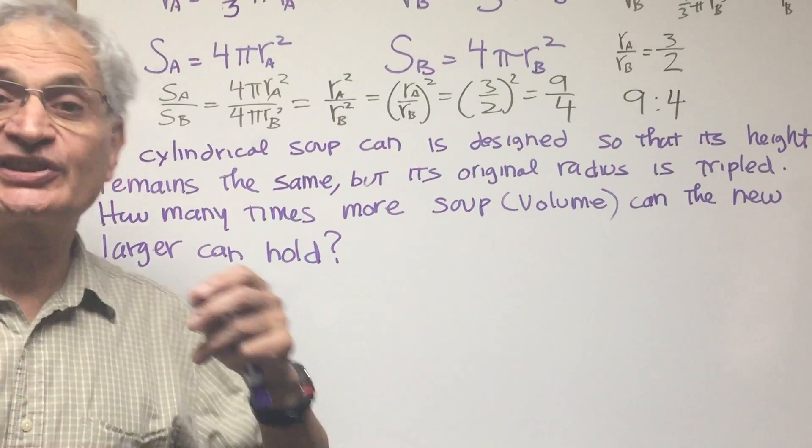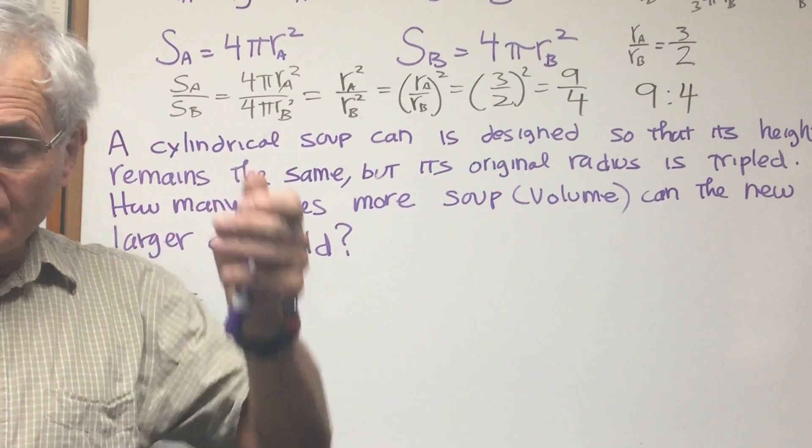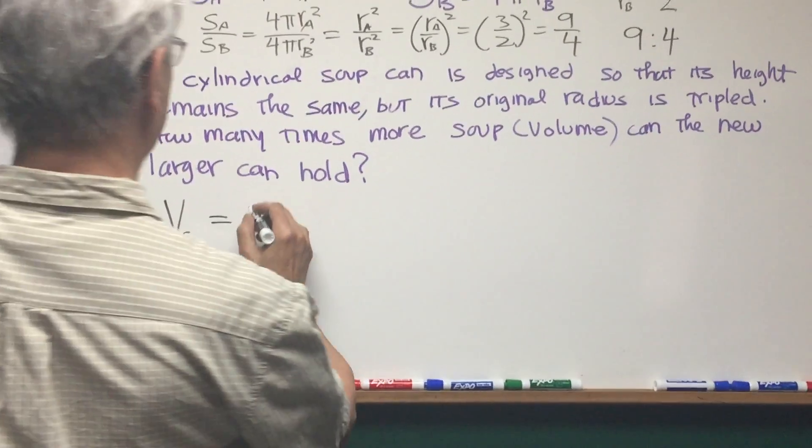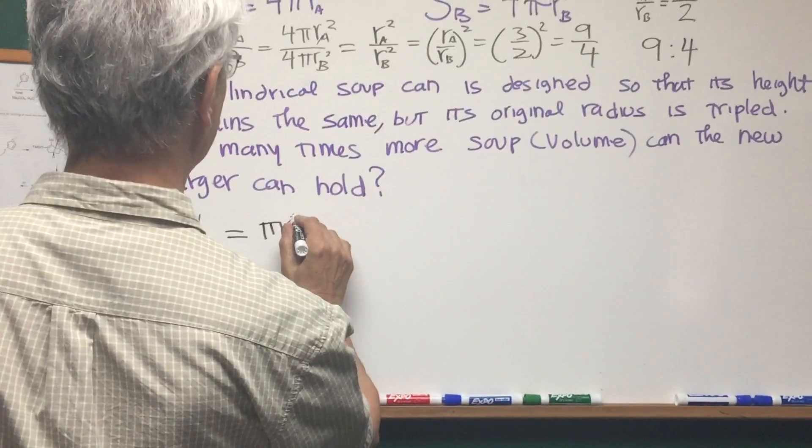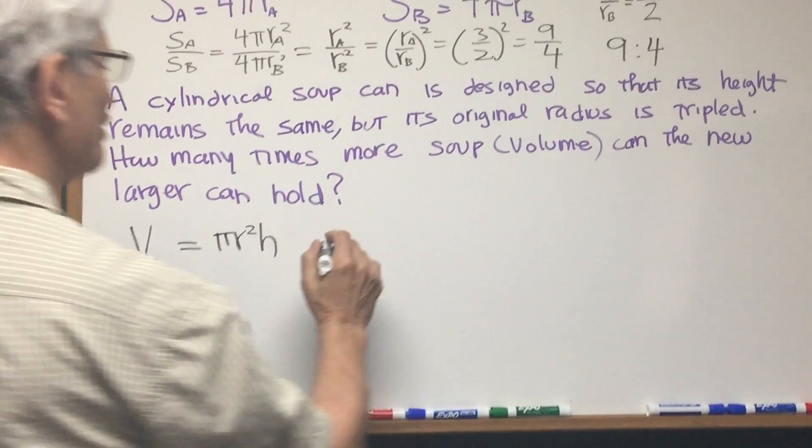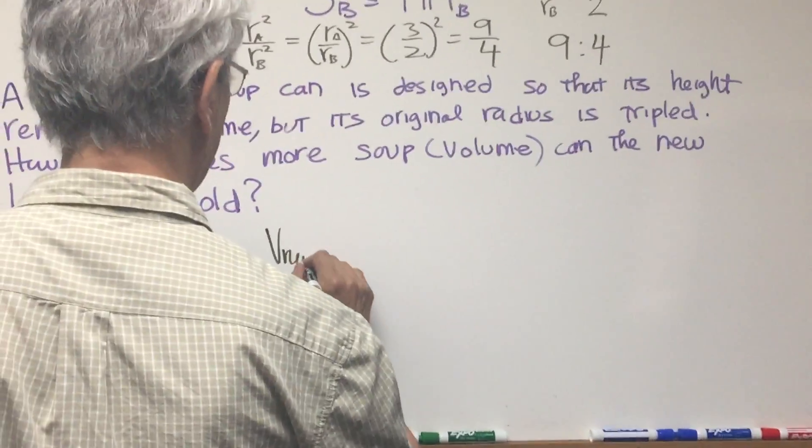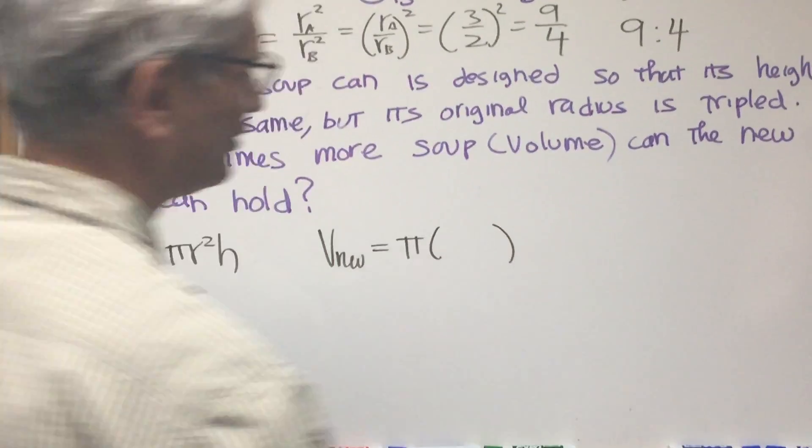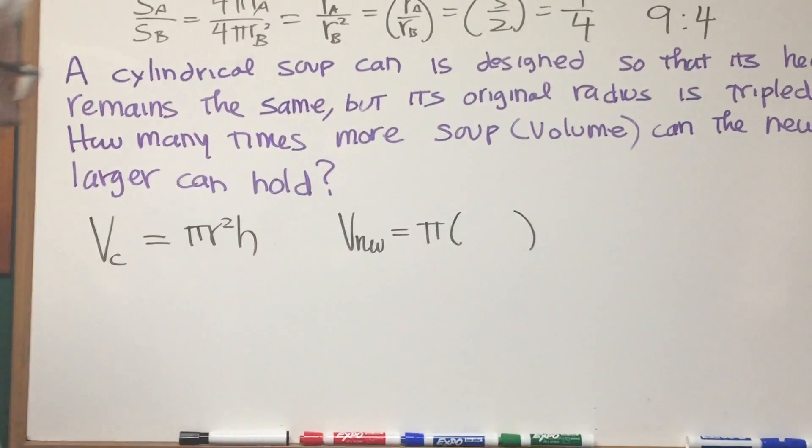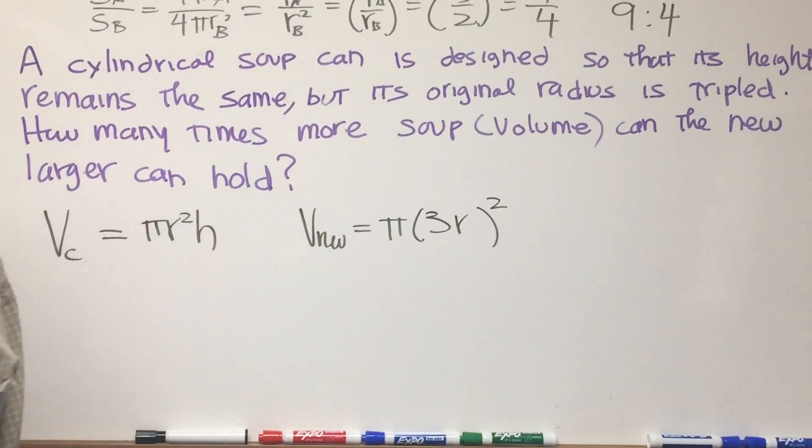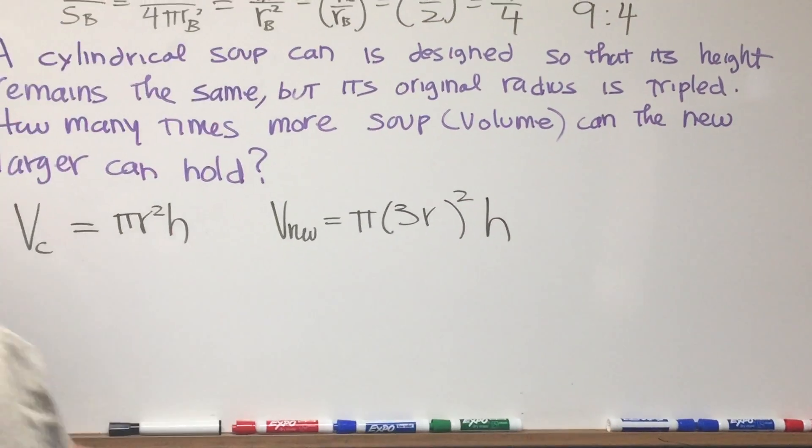Well, intuitively, it's going to be the area of the lid times the height. So we have an area times the height to give us the volume. So it's going to be πr²h. Okay, so what is the new volume? The new volume is going to be πr² times, well, the radius is going to be tripled, so it's going to be 3 times the original radius, and then times the height. The height is going to remain the same.